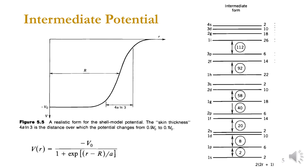We therefore modify the potential to get a more realistic model: the intermediate potential, which combines the smoothness of the harmonic oscillator and the depth of the infinite well. This is the Woods-Saxon type potential: V(r) = −V₀ / (1 + exp((r − R̄)/a)). Solving the Schrödinger equation with this gives levels such as 1p, 1d, 2s, 1f, 2p, and so on.